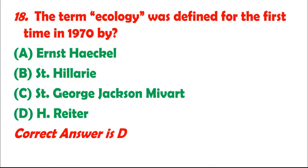Question 18: The term ecology was defined for the first time in 1970 by: A. Ernst Haeckel. B. St. Hilary. C. St. George Jackson Mivart. D. H. Reiter. Correct answer is D.